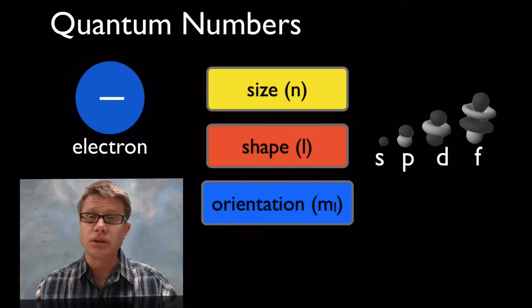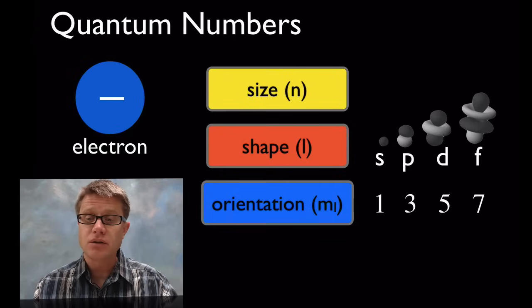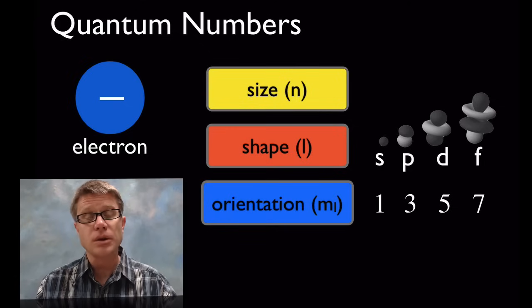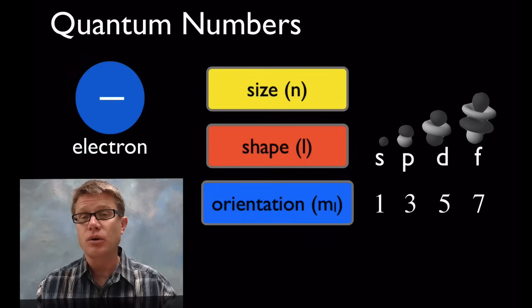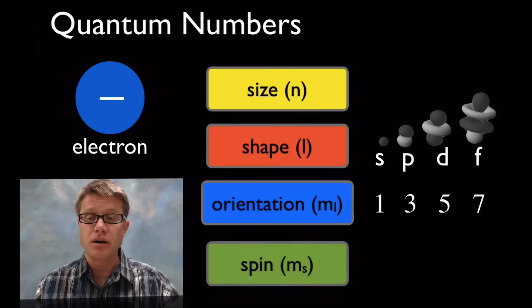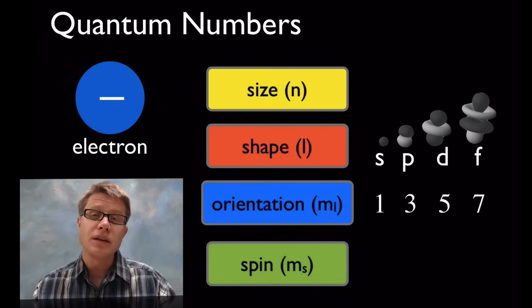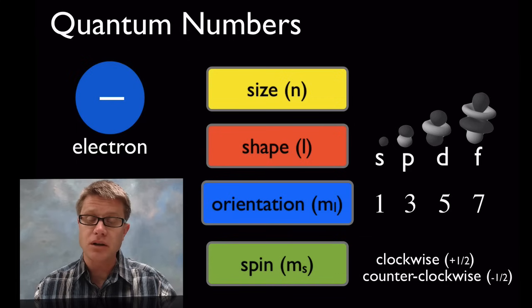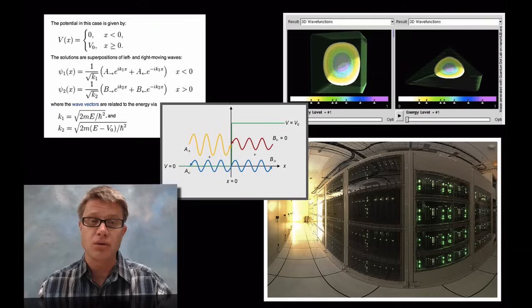Then we move into the orientation, which is going to be M sub L. And so S can only have one orientation. P can have three orientations. And so it just goes 1, 3, 5, 7. And so when we're adding in the orbital diagram as we're adding electrons to it, we're going to put a lot more electrons in the orbitals of the F subgroup than we are, for example, the P. And then there's going to be the spin. And since those electrons have spin counterclockwise or clockwise, we can only put two in every orbital.